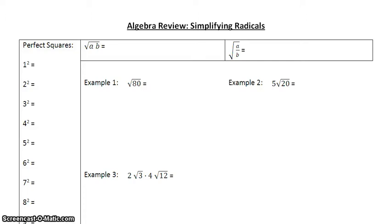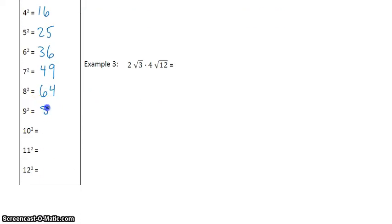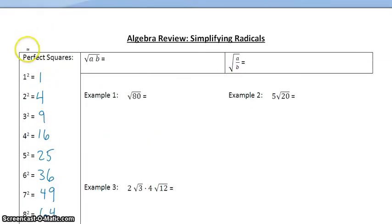The first topic we need to cover in order to review simplifying radicals is to go over the perfect squares. 1 squared is 1, 2 squared is 4, 3 squared is 9, and so forth, all the way through 12 squared. My best advice for you is to memorize the perfect squares.